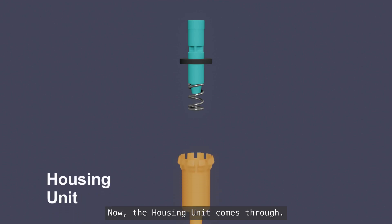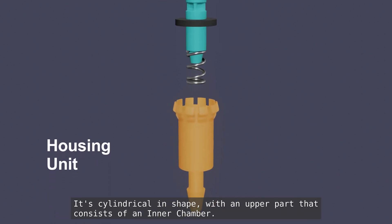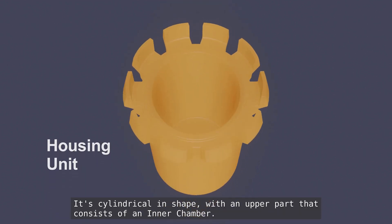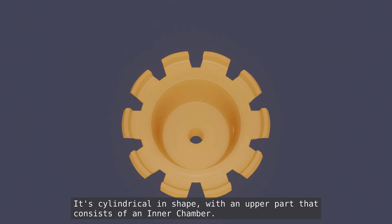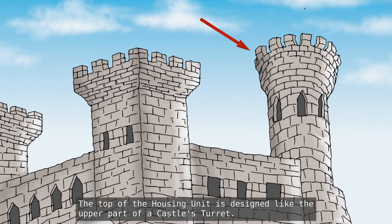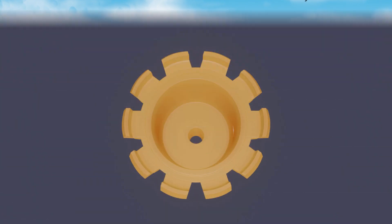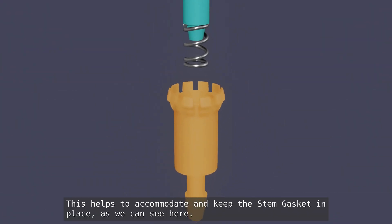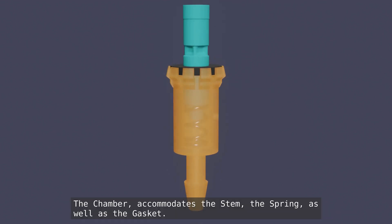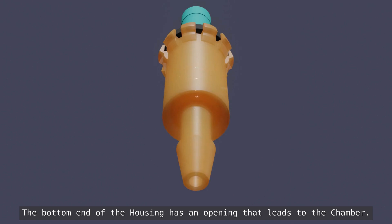Now, the housing unit comes through. It's cylindrical in shape with an upper part that consists of an inner chamber. The top of the housing unit is designed like the upper part of a castle's turret. This helps to accommodate and keep the stem gasket in place, as we can see here. The chamber accommodates the stem, the spring, as well as the gasket. The bottom end of the housing has an opening that leads to the chamber.